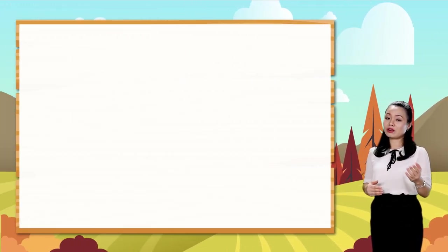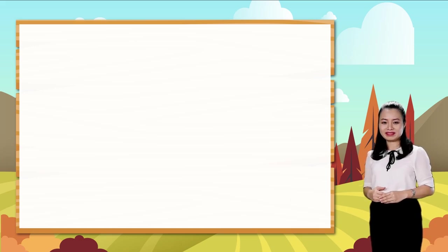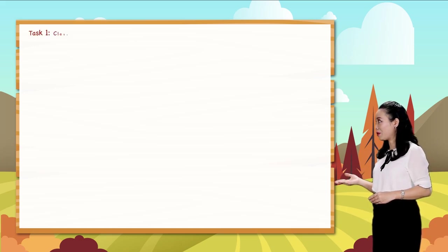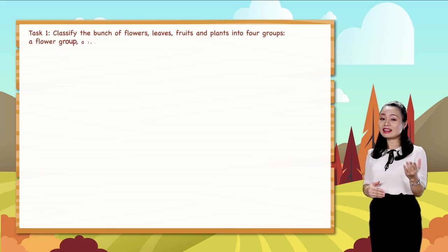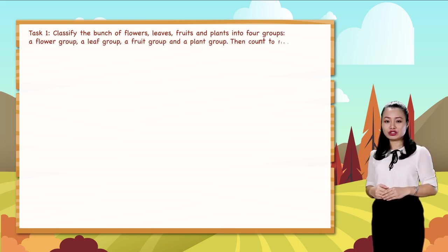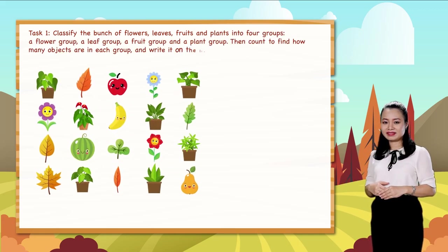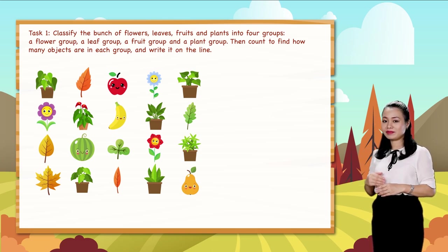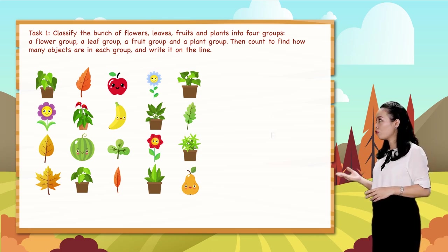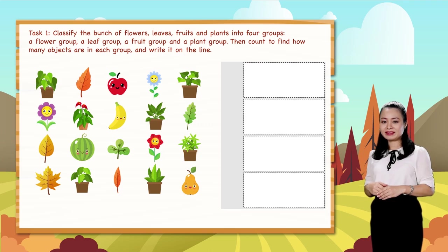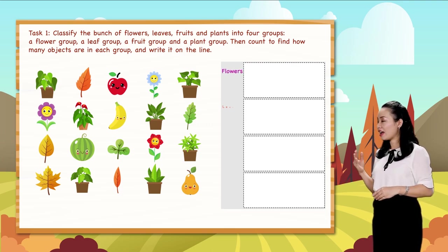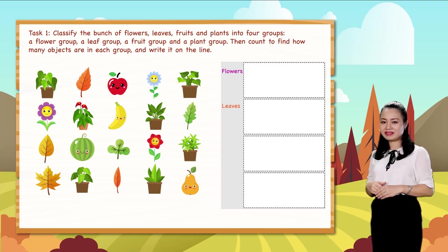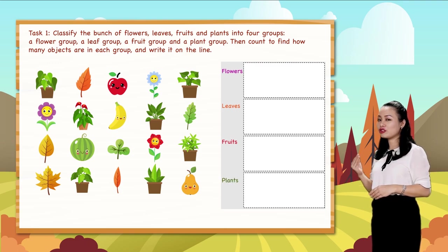Now let's take on a task together. Task one: classify this bunch of flowers, leaves, fruits, and plants into four groups — a flower group, a leaf group, a fruit group, and a plant group.